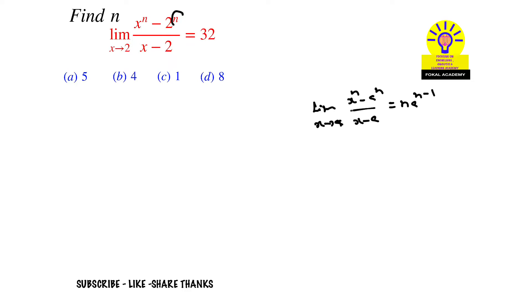Here we don't know what the n value is. Now we are going to find n by applying this formula. We get n times—here a means 2—so n × 2^(n-1) = 32.